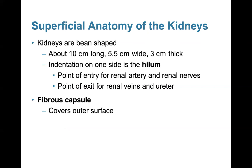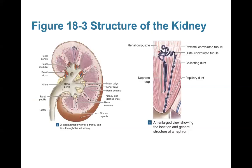The kidneys are bean-shaped organs, about 10 centimeters long, five and a half centimeters wide, and about three centimeters thick. There is an indentation on one side called the hilum, which is the point of entry for the renal artery and renal nerves, and the point of exit for the renal veins and ureters. The fibrous capsule is the connective tissue covering the outer surface of the kidney, and segments filter into the renal pelvis which drains into the ureter.